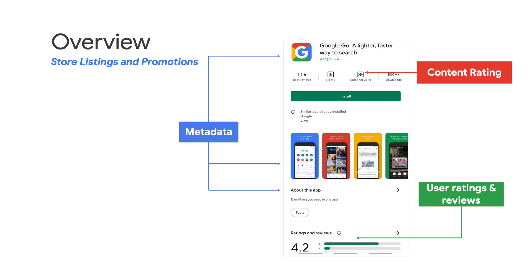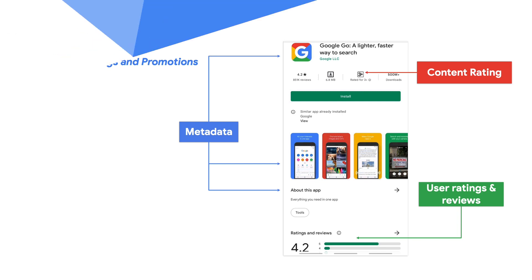These elements give users more insights into the app and a better understanding of its current state, since apps can change over time and often add and remove features. They are meant to be trustworthy and are a great way to share helpful information to assist users in finding great apps and games on the Google Play Store. Now, let's go over some common violations of these store listing elements and how to avoid them.